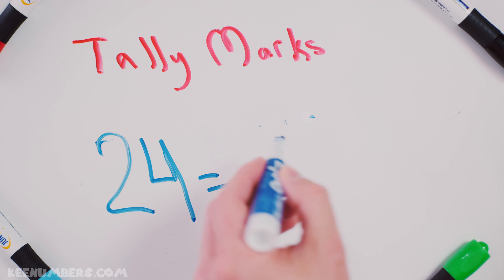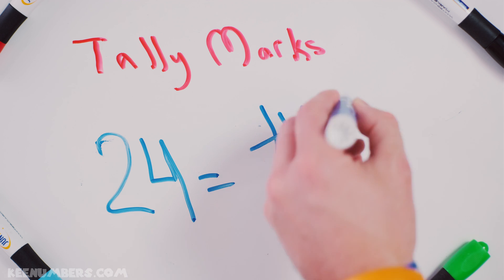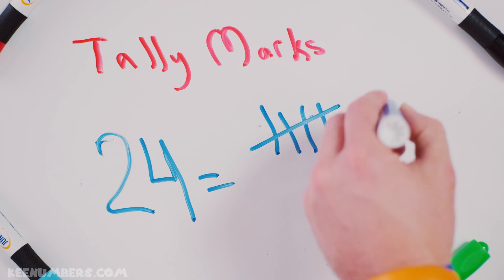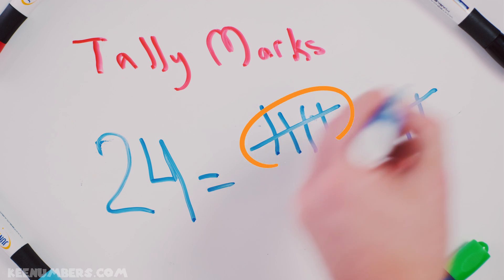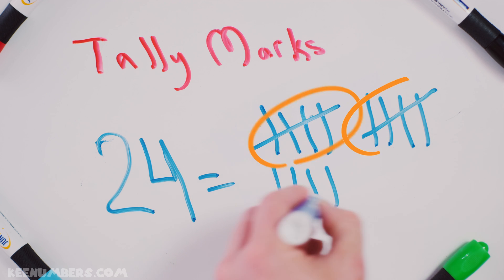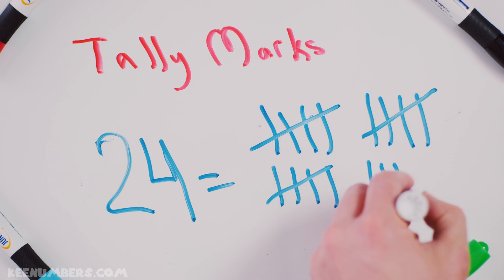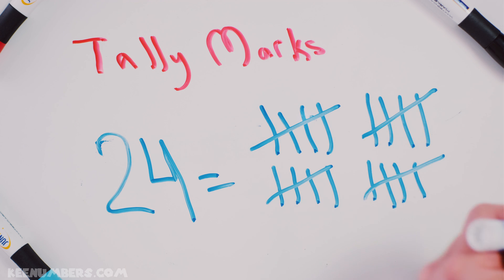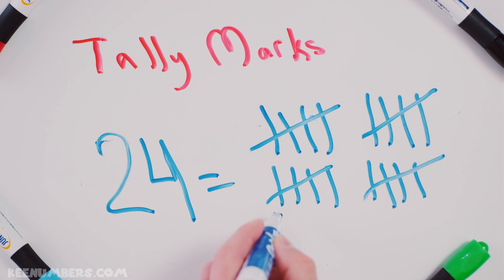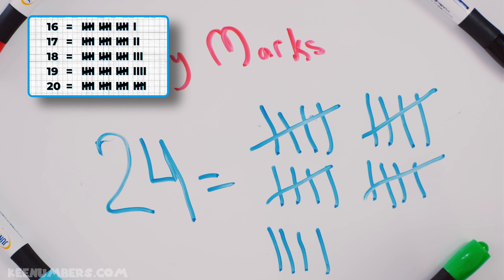What about 24? We're going to go 1, 2, 3, 4, 5 — don't forget to do the diagonal line every 5. Then 1, 2, 3, 4, 5 — we're at 15, keep going. Now we're at 20, we need 4 more. That's 24 in terms of tally marks.